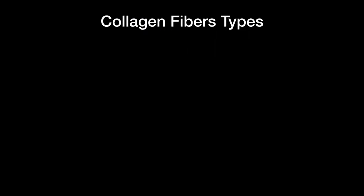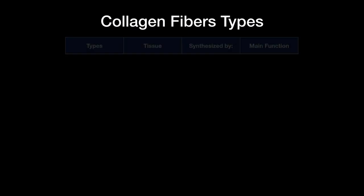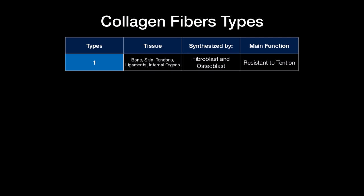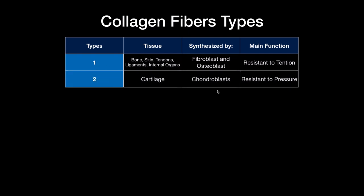About 29 types of collagen fibers have been found. Type 1 collagen is the most common in the body — its main function is resistance to tension, and it's found in bones, skin, tendons, ligaments, and internal organs; synthesized by fibroblasts and osteoblasts. Type 2 collagen is resistant to pressure and is found mainly in cartilage at joints, synthesized by chondroblasts.